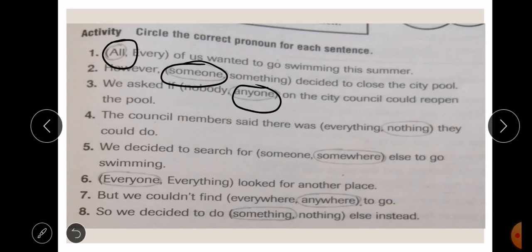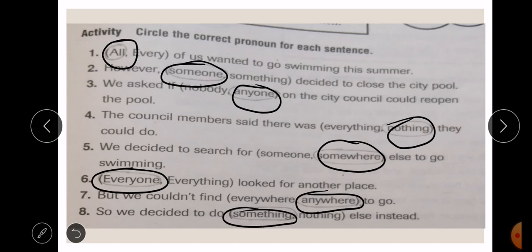Remember, sentences number 1 to 8 is a single story. The council members said that there was nothing that they could do. We decided to search for somewhere else to go swimming. Everyone looked for another place. But we couldn't find anywhere to go, which means there was no other place to go. So we decided to do something else instead. That's it, you are done with the first activity.